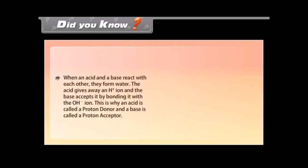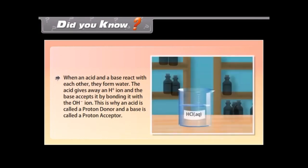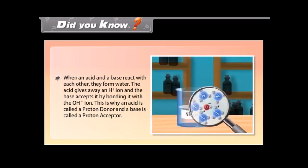Did you know? When an acid and a base react with each other, they form water. The acid gives away an H plus ion and the base accepts it by bonding it with the OH ion. This is why an acid is called a proton donor and a base is called a proton acceptor.